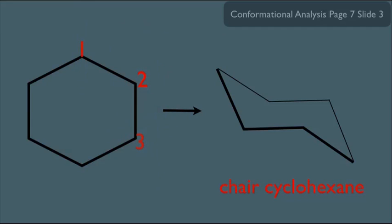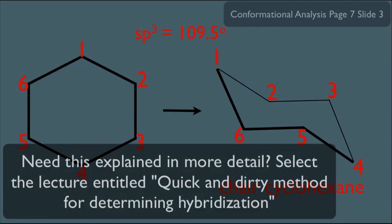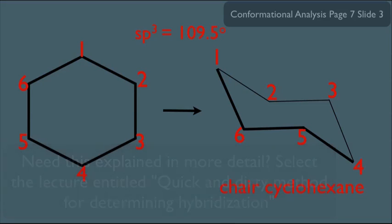This is a conformation of cyclohexane, and they call it chair cyclohexane. These would be the six carbons for the flat structure on the left, and the six carbons are right here in chair cyclohexane. The reason why cyclohexane likes to adopt this conformation is because it allows the bond angles to be 109.5 degrees. If you determine the hybridization of each carbon in this ring, you'll see they're all sp3, which is why they want the 109.5 degree bond angles.